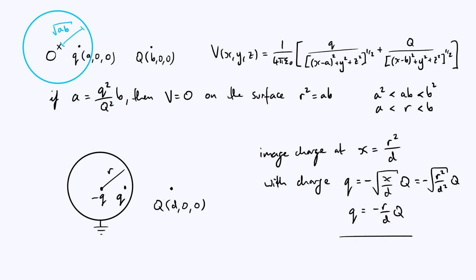One final word of warning: the solution from the method of images only applies exterior to the spherical conductor. Inside any conductor in electrostatics there is zero electric field. So the total electric field is zero inside the conductor, and outside it is given by the superposition of either two or three charges depending on whether the sphere is grounded or not. Thanks for watching — I hope it's been interesting and I will see you again soon for more physics discussions.